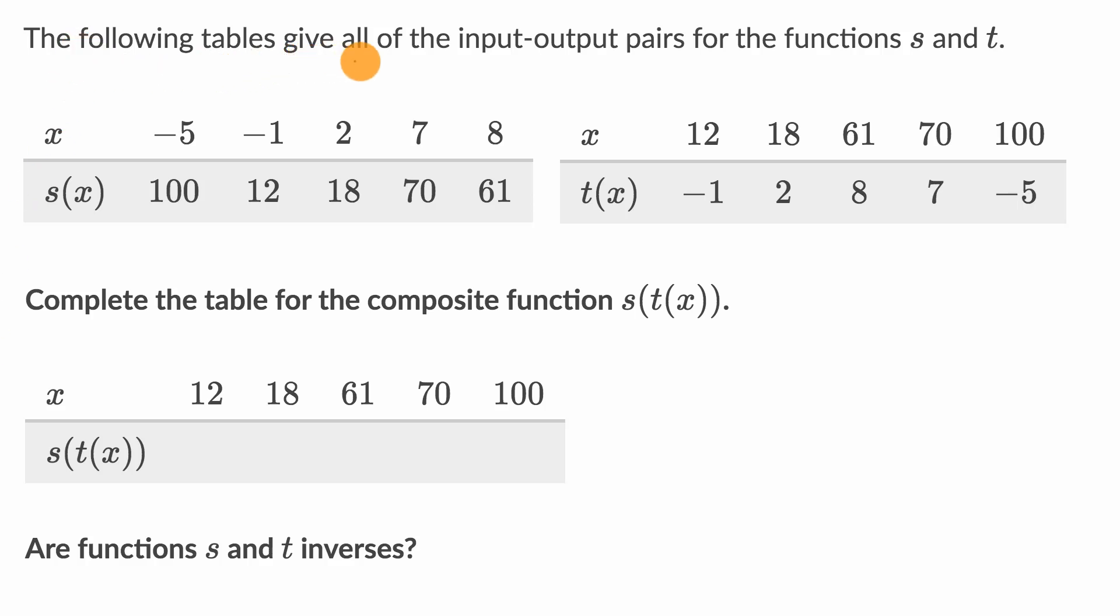The following tables give all of the input-output pairs for the functions s and t. So we see this first table here, we have some x's, and then they tell us what the corresponding s of x is. And then in this table, we have some x's, and they tell us the corresponding t of x. It says, complete the table for the composite function s of t of x.